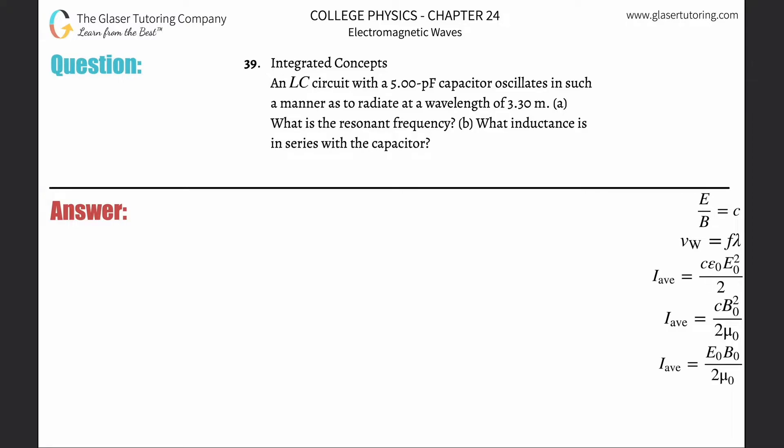Number 39, integrated concepts: An LC circuit with a 5 picofarad capacitor oscillates in such a manner as to radiate at a wavelength of 3.3 meters. Letter A: What is the resonant frequency? Alright, so basically they tell you the wavelength and you want to find the frequency, and they tell you that there's basically radiation that's happening.